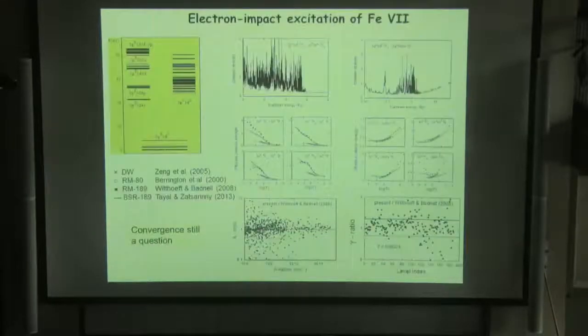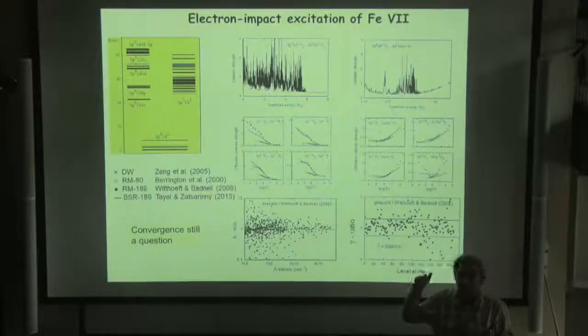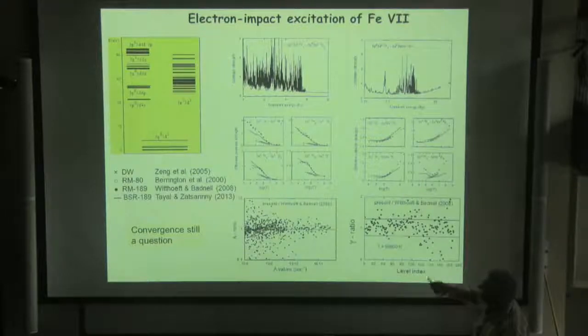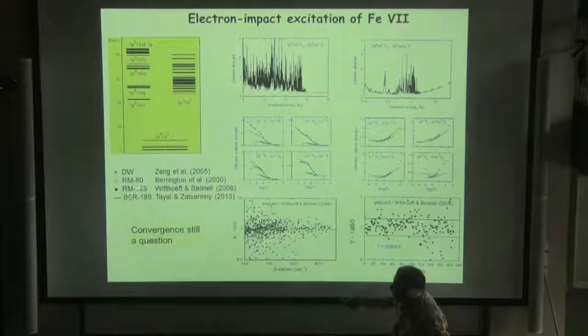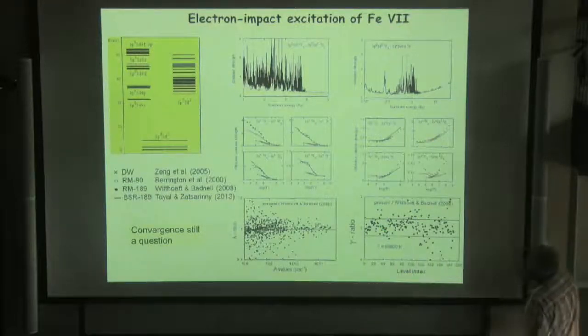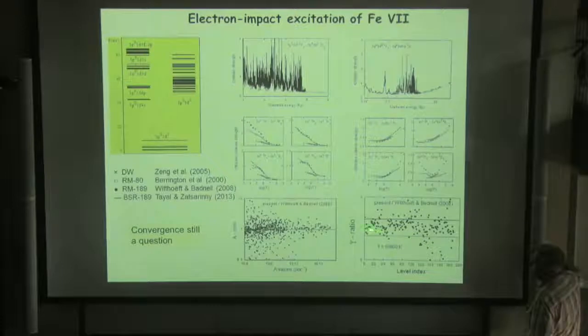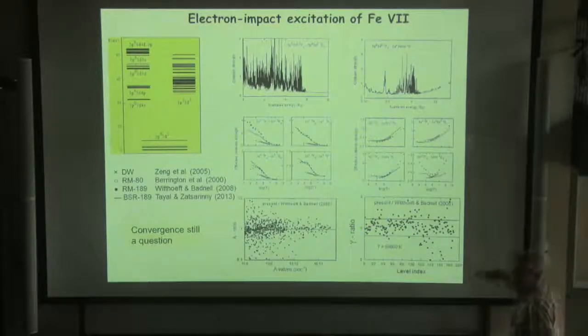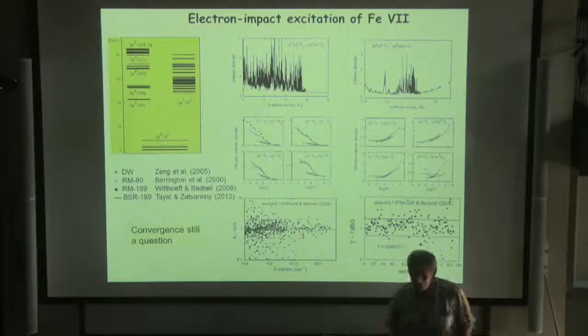I still want to show that even accurate representation of target states for multi-charged ions is also very important. Because here, comparison of two calculations in the same scattering approximation, the same number of target states: standard model and our calculations. And here, the results, for example, gamma ratio between rate coefficients. We see that it's rather big difference. So even for these highly charged ions, we need to use the accurate target states.